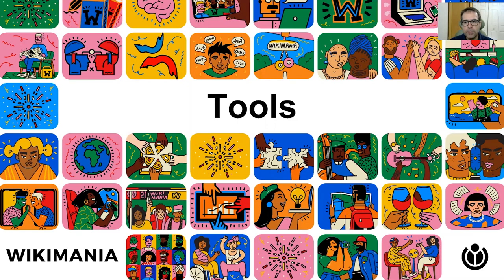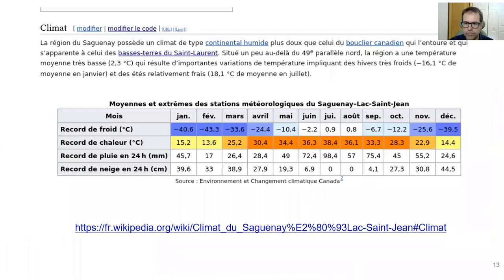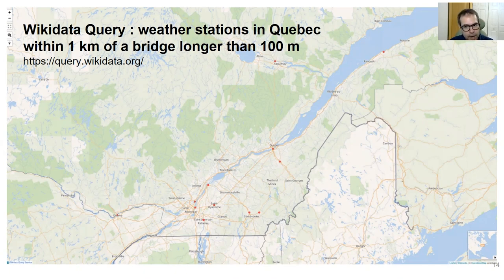Several tools have been developed to convert and manipulate the original data, notably to import it in Commons and Wikidata. An interactive map was created to select a subset of weather stations. I selected the stations of the region where I was born, used another tool to combine the almanac bulletin of these stations, and then uploaded the result in Commons. This combination of stations gives a climate overview of the region — the table seen earlier on the Wikipedia page. We also wrote SPARQL requests to identify weather stations using Wikidata. For example, a SPARQL request can identify all the weather stations in Quebec that are within one kilometer of a bridge longer than 100 meters.